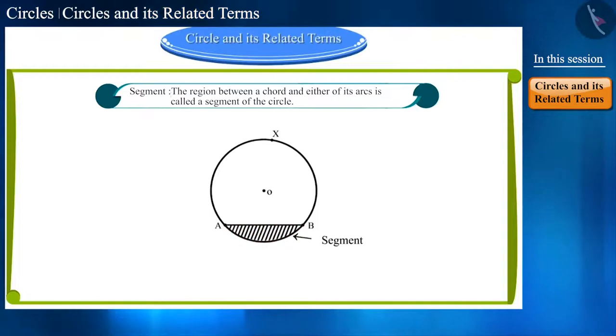You can see that we got two types of segments of circle. We call the large part as major segment and the small part as minor segment.